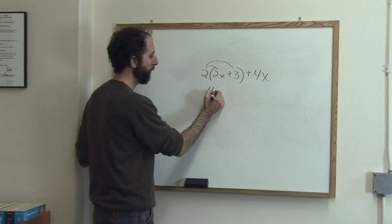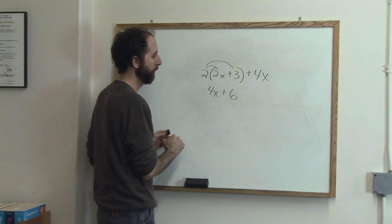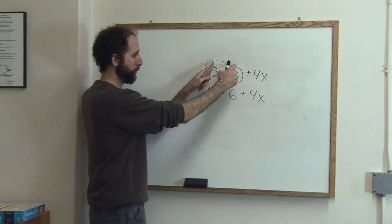So we're going to do 2 times 2 is 4x. 2 times 3 is 6. And then we have that over there. Notice that I don't distribute the 2 to this guy, only to what's in the parentheses.